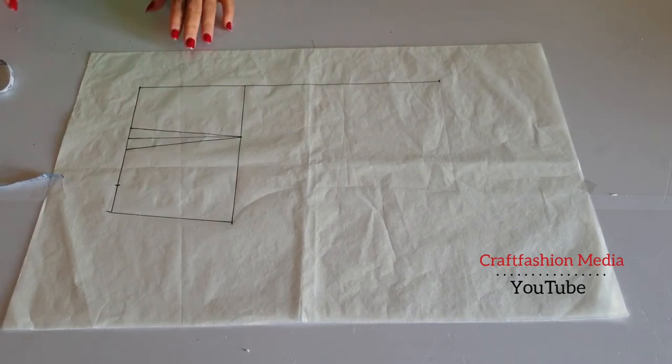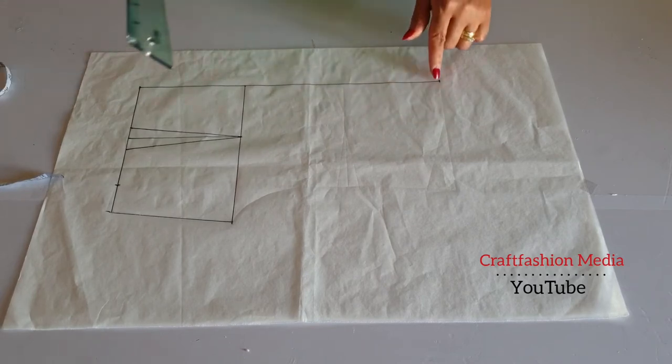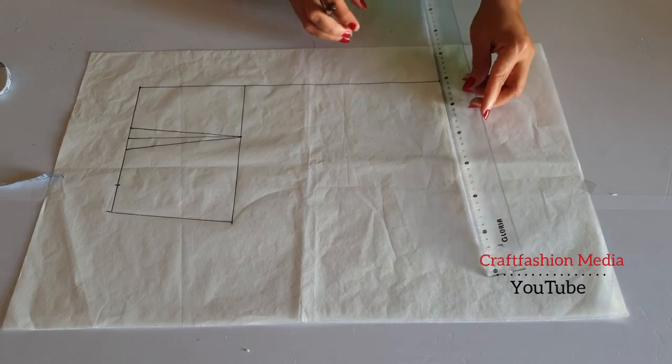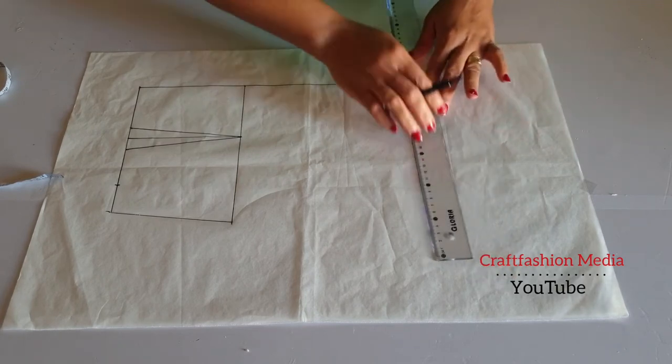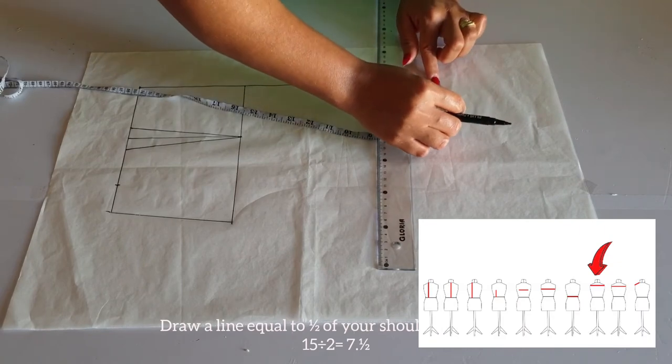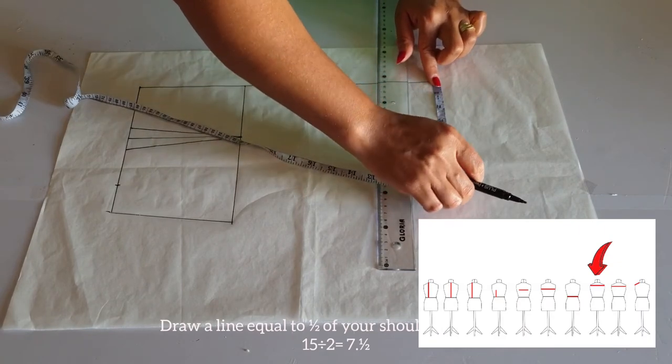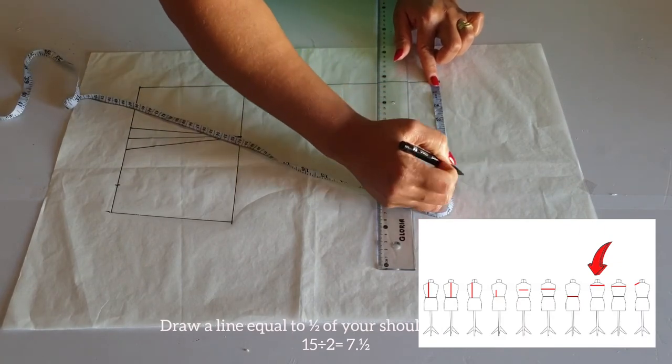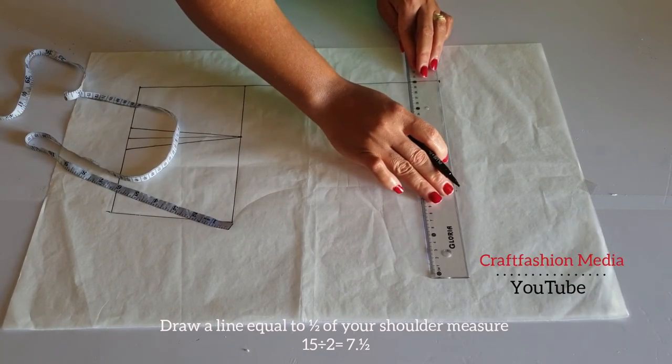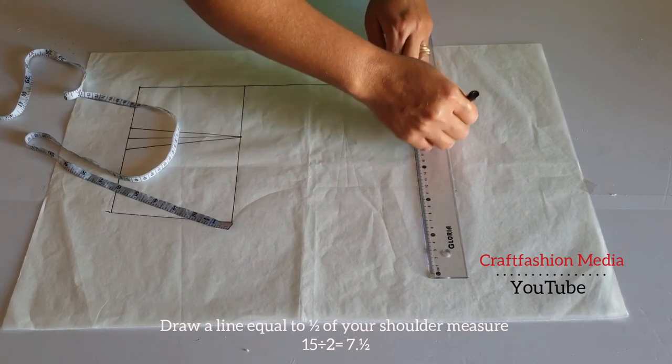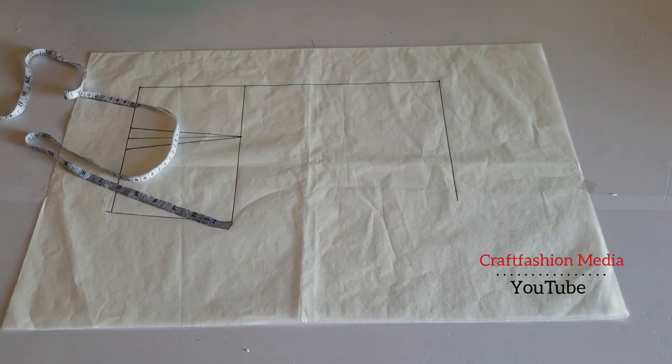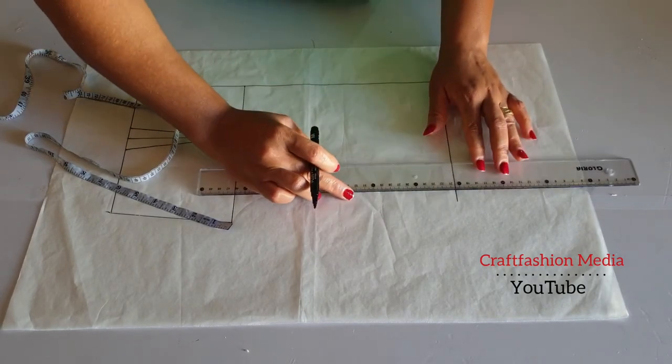So now let's move over to shoulder and neck area. I will square a line across my shoulder and extend the line equal to half of my shoulder measurement. I have 15 inches as my shoulder measurement, so I'm going to divide it by two. That will give me 7.5. I will mark it out and square a line.